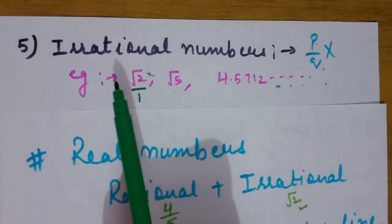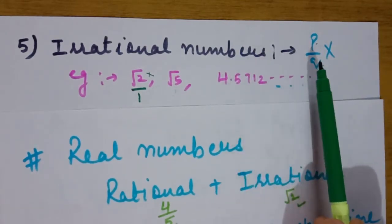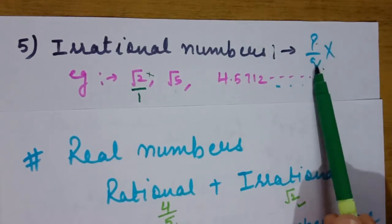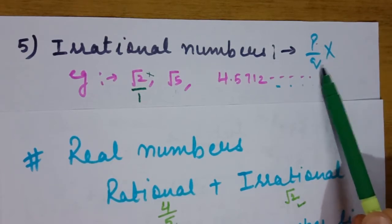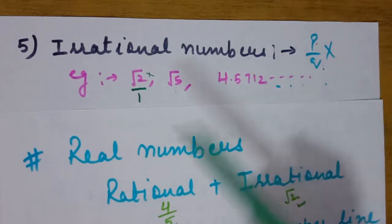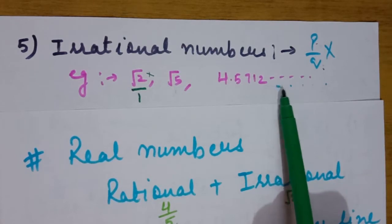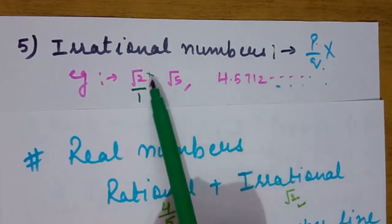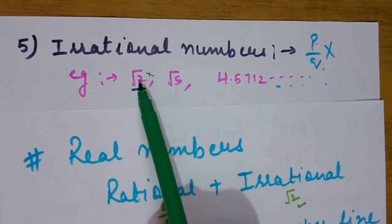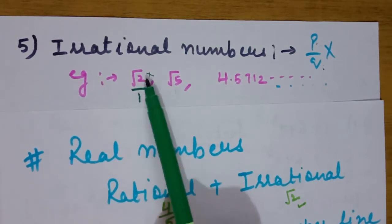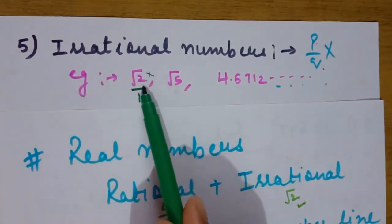Next are irrational numbers. Irrational numbers are those numbers which cannot be written in the form of P upon Q, where P and Q are integers and Q is not equal to 0. Examples are root 2, root 5, and 4.5712... Now, some students may think that root 2 upon 1 is also a rational number. It is in P upon Q form, but root 2 is not an integer — P and Q both must be integers, and root 2 is not an integer.